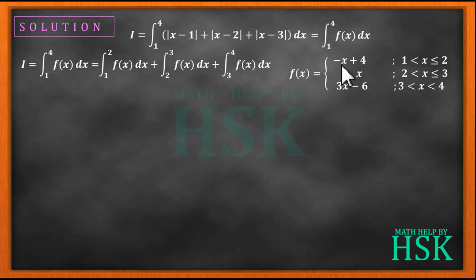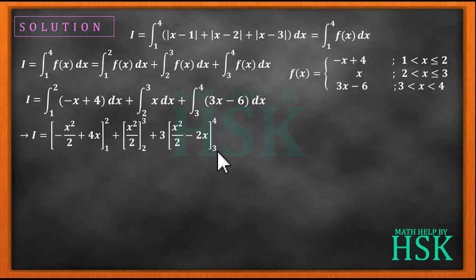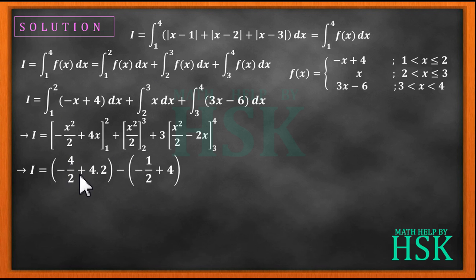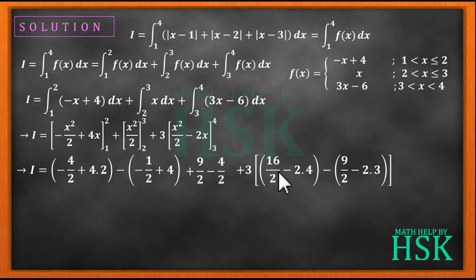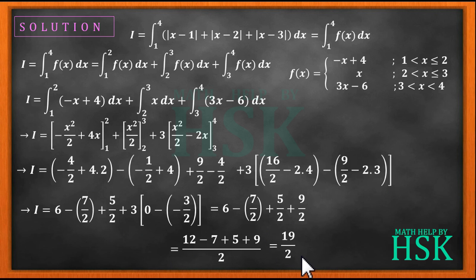Since we have simplified f(x), we place its value according to the intervals and perform the integration. So I equals the integral of minus x plus 4 dx from 1 to 2, plus the integral of x dx from 2 to 3, plus the integral of 3x minus 6 dx from 3 to 4. On integration and solving the limits, the first term gives minus 4 over 2 plus 4 times 2 minus (minus 1 over 2 plus 4 times 1); combined with the other terms, the total on simplification gives I equal to 19 over 2.